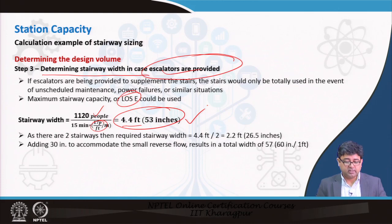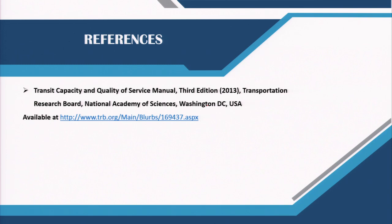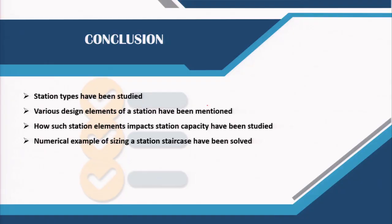That brings us to the end of this lecture. The same reference provided in previous lectures is available for free download and contains all of these solved examples. In conclusion, today we covered the different station types, the various design elements of a station, how station elements impact station capacity, and an example of how to measure the capacity of one such element — the staircase. Thank you very much for your attention.